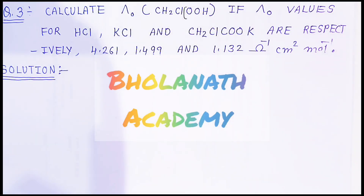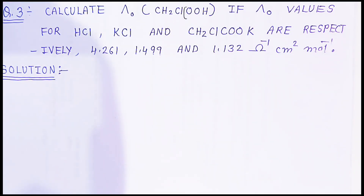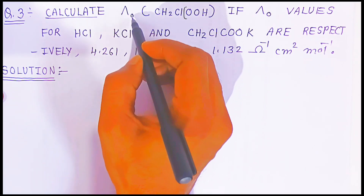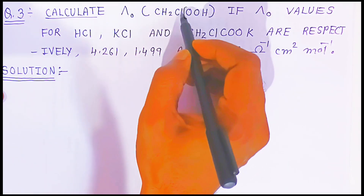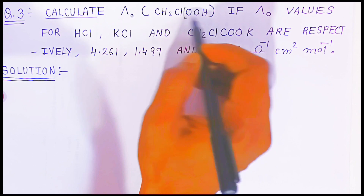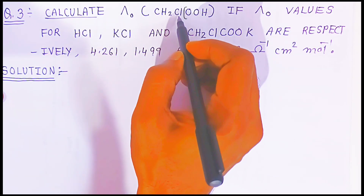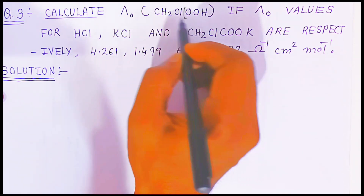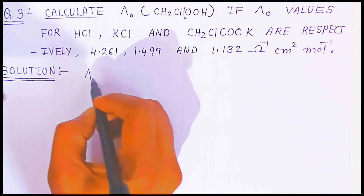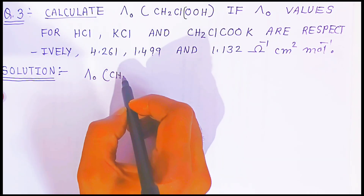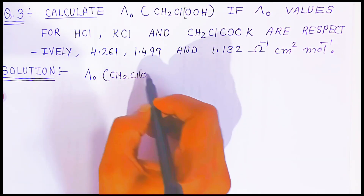Hello students, welcome to Bholanath Academy. In this video we are going to see question 3. In question 3 we have to calculate the molar conductivity at zero concentration of monochloroacetic acid. The 'mono' prefix indicates one chlorine, and this is derived from acetic acid to monochloroacetic acid, CH₂ClCOOH.